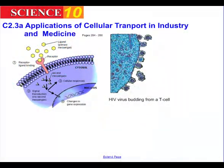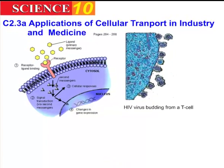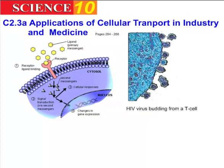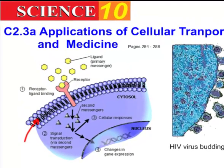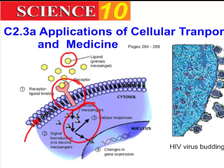Our knowledge of how cell membranes work has led to some interesting applications in industry and medicine. To recap: in our membrane we have our phospholipid bilayer, and dotted throughout the membrane we have receptor proteins that stick out. Certain molecules fit these receptors perfectly, and that connection results in a message that travels through the cytoplasm and may eventually reach the DNA.